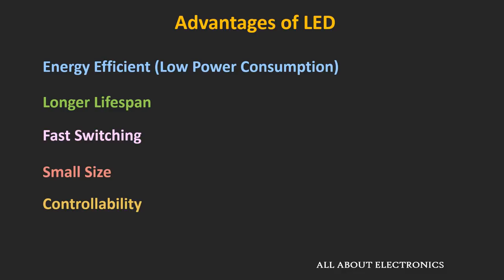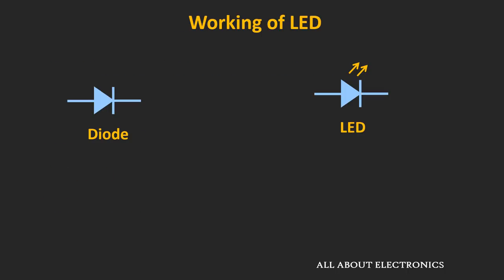And the other advantages are the smaller size and the better controllability. The controllability is in the sense that the brightness of the LED can be easily controlled. So these are some of the advantages of the LED. Now let's see the working of the LED.